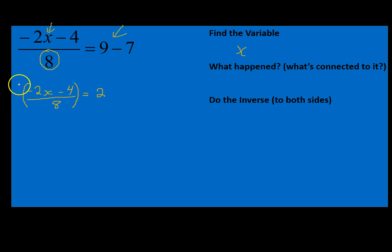We're going to multiply both sides of this equation times 8. That helps us to cancel out these 8's and leave us with negative 2x minus 4 is equal to 2 times 8 which is 16. I'm going to add 4 to both sides of the equation which leaves me with negative 2x is equal to 20.